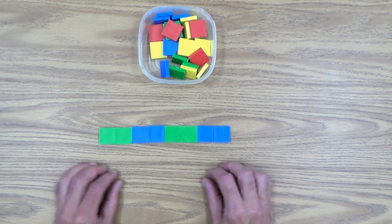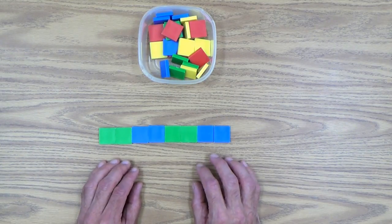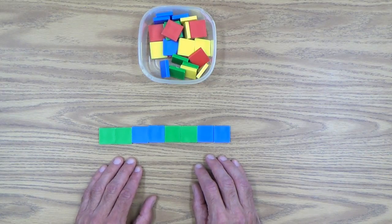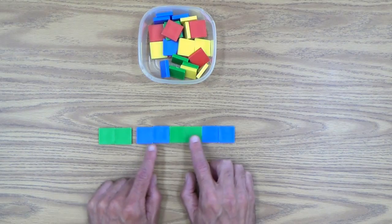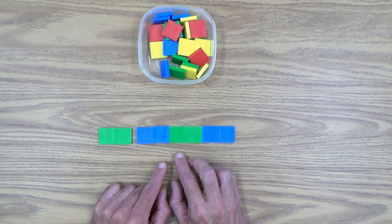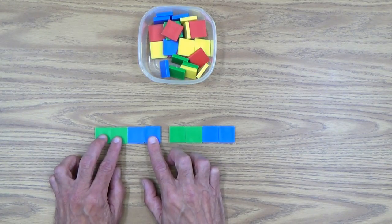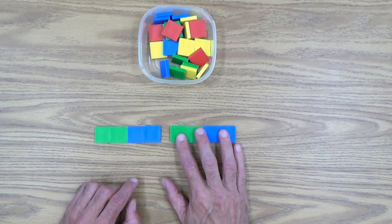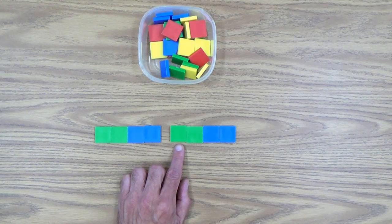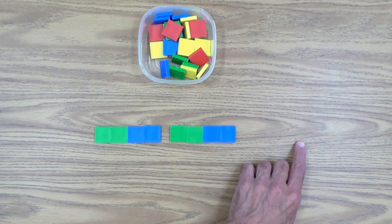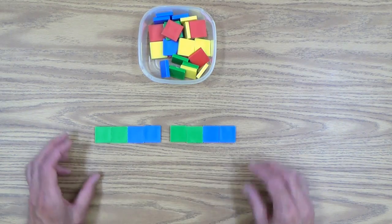This is all new to your child. So one thing you might have to do to help him or her along a little bit is to make a little space between the things here. Show them green, green, blue, blue. And then look, it repeats itself. Green, green, blue, blue.